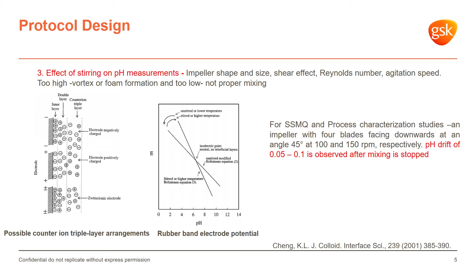Next we looked at the impact of stirring on pH measurement. Impeller size, shape, agitation, and vortex formation have a significant impact on pH measurement. Usually when you are measuring pH under stirring conditions, the pH will keep drifting once the stirring has stopped. For the small-scale model qualification and process characterization in this study, we used a four-blade downward-facing impeller.